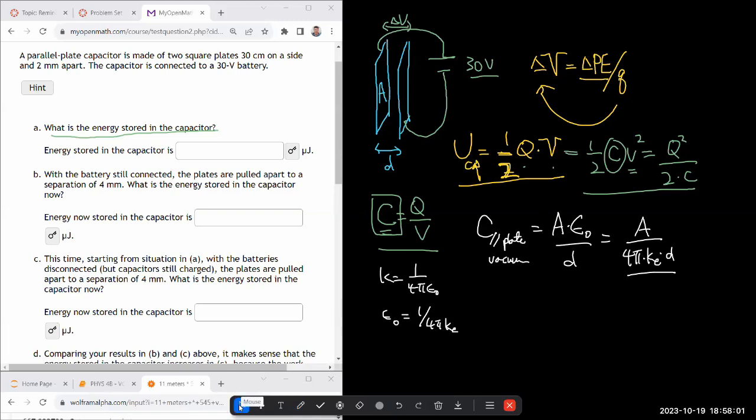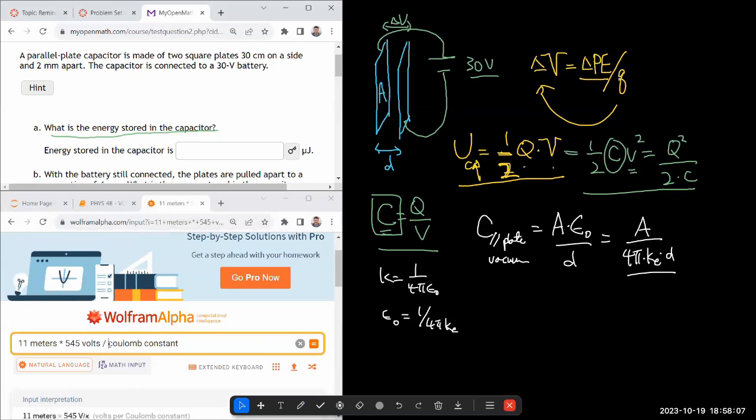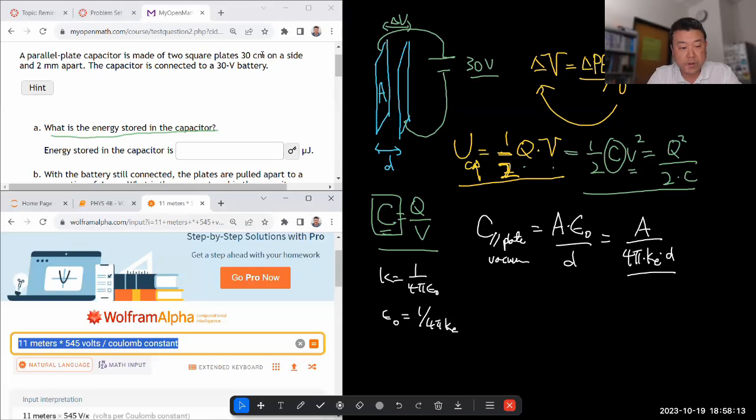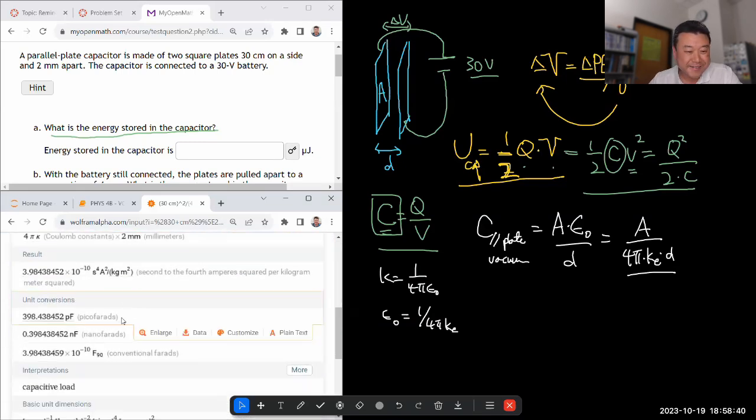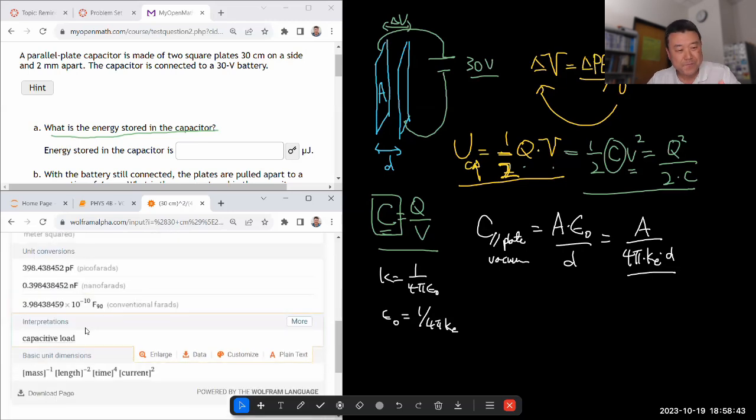So I can replace that. So it'll be A divided by four pi times Coulomb constant times D. That should be the capacitance of parallel plates. Let me try plugging in numbers with WolframAlpha and see if I get an answer that gets graded as correct. So let me first try to get the capacitance. That's going to be the area which I can calculate from here, 30 centimeters squared, divided by four pi Coulomb constant times the separation two millimeters. And because I'm using WolframAlpha, I can just put in the units as they are without converting. Yeah, farads, that's capacitance units. Okay, so far so good.